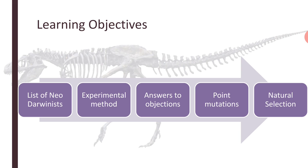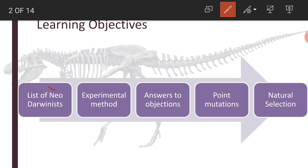The learning objectives behind this lesson are: we are going to learn about the list of Neo-Darwinists — and this list is very long — and the various experimental methods followed by these Neo-Darwinists to support the cause of Charles Darwin. There are also various objections to Darwinism, and the supporters of Darwin, aptly called Neo-Darwinists, found answers to those objections. We will also learn about point mutations in relation to Neo-Darwinism, and the natural selection concept will be highlighted in this session.